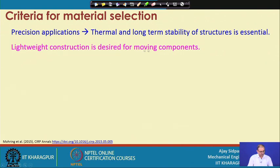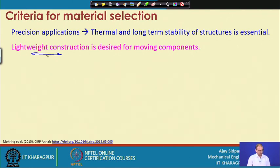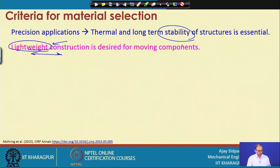Lightweight construction is desired for moving components. If it is not lightweight, then moving from one position to another will take time because you have to overcome the inertia forces to achieve the required motion. However, the structure should still be stable and very strong, because lightweight structures are sometimes not stable and you may end up with wrong design calculations.